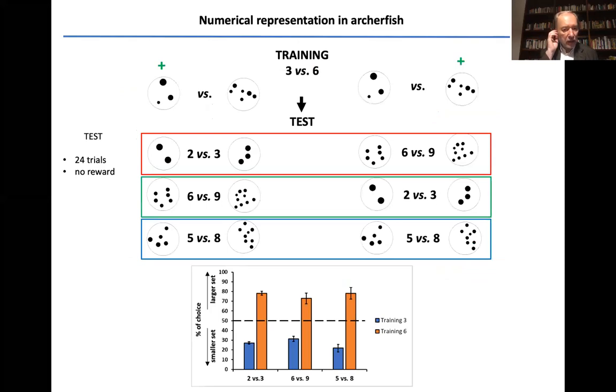Then after that they were tested for choices, for instance for two versus three, such a way that in this case if they choose the absolute number they would choose three. If they choose on the basis of a relative numerosity they would choose two.